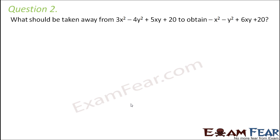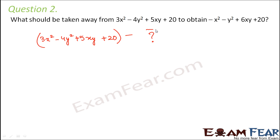Question number 2: What should be taken away from 3x squared minus 4y squared plus 5xy plus 20 to obtain minus x squared minus y squared plus 6xy plus 20? So we are given the expression 3x squared minus 4y squared plus 5xy plus 20, and we need to find what number should be subtracted from it to get minus x squared minus y squared plus 6xy plus 20.